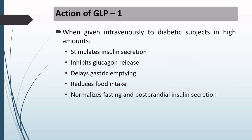What is the action of GLP-1? When GLP-1 is given intravenously to diabetic patients in high amounts, firstly it will stimulate insulin secretion — this is the most important feature. It also inhibits glucagon release. So GLP-1 stimulates insulin secretion and inhibits the release of glucagon. Along with that, it delays gastric emptying, reduces food intake, and normalizes fasting and postprandial insulin secretions.